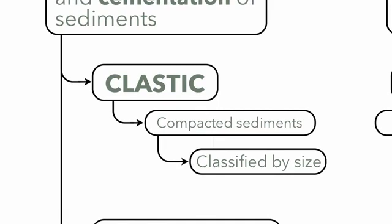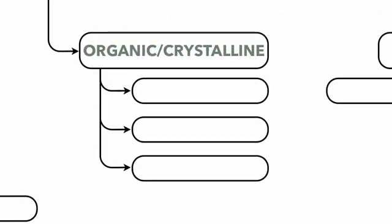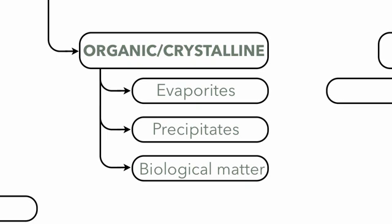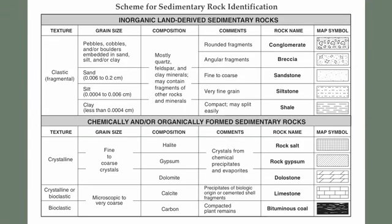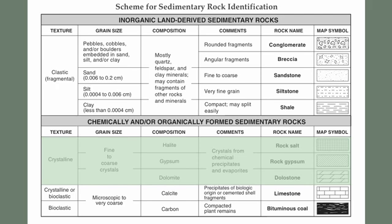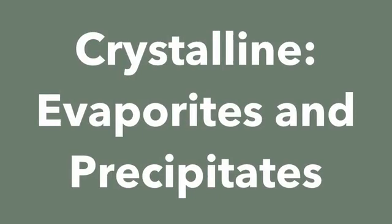Now let's look at the other two types: organic and crystalline sedimentary rocks. For the crystalline type, we have evaporites and precipitates. For the organic type, we have bioclastic rocks. These are listed under chemically or organically formed sedimentary rocks on the reference table, and they do not necessarily form from compacted sediments — the crystalline ones form in an entirely different way.